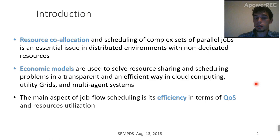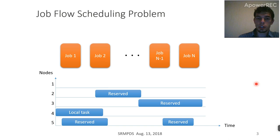When we talk about efficiency, the main aspect of job flow scheduling is efficiency first in terms of quality of service provided to users, and second is how efficient the actual resource utilization is. On this slide, we have a schematic picture of what the job flow scheduling problem is.